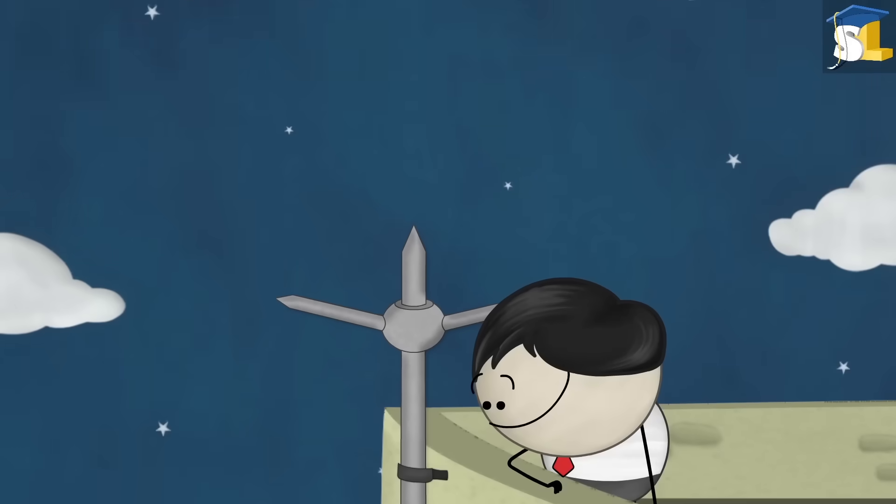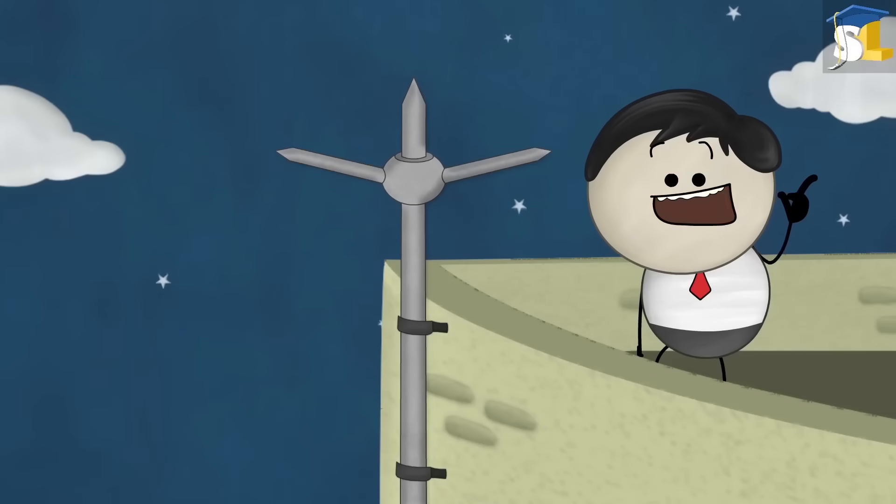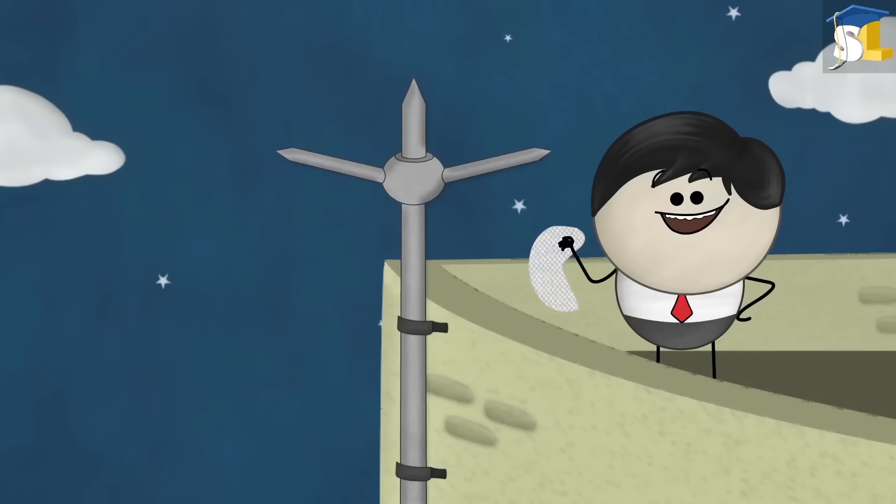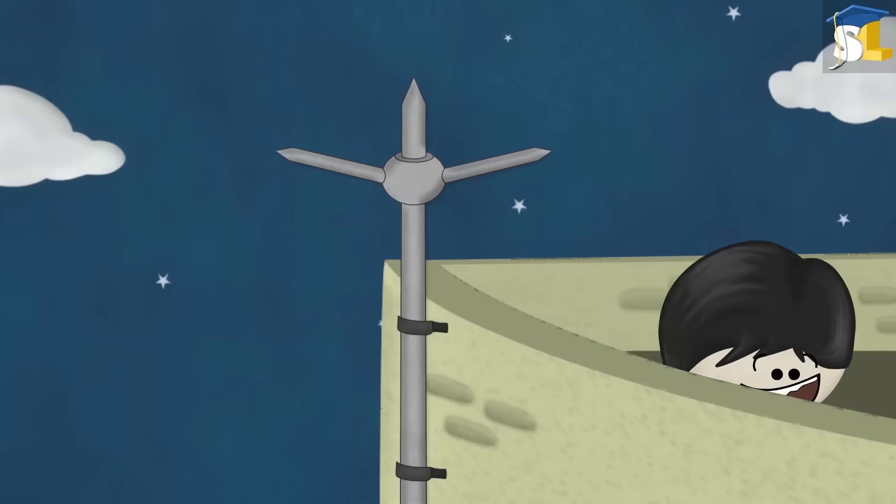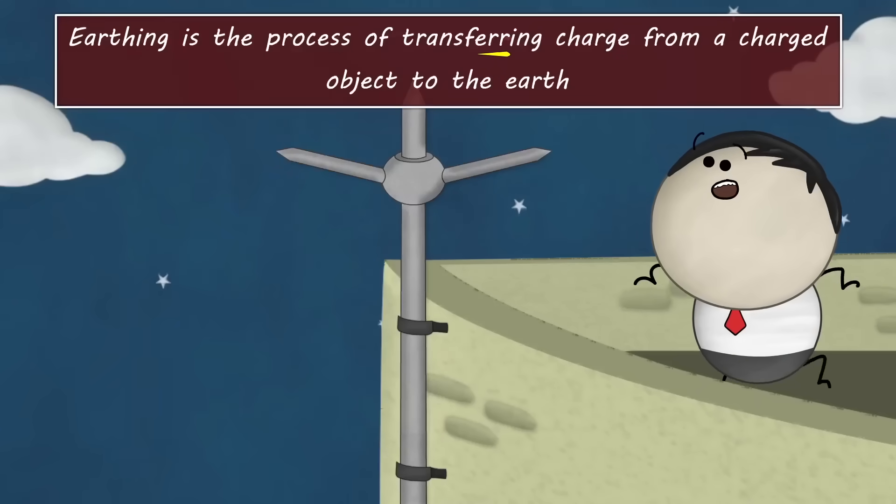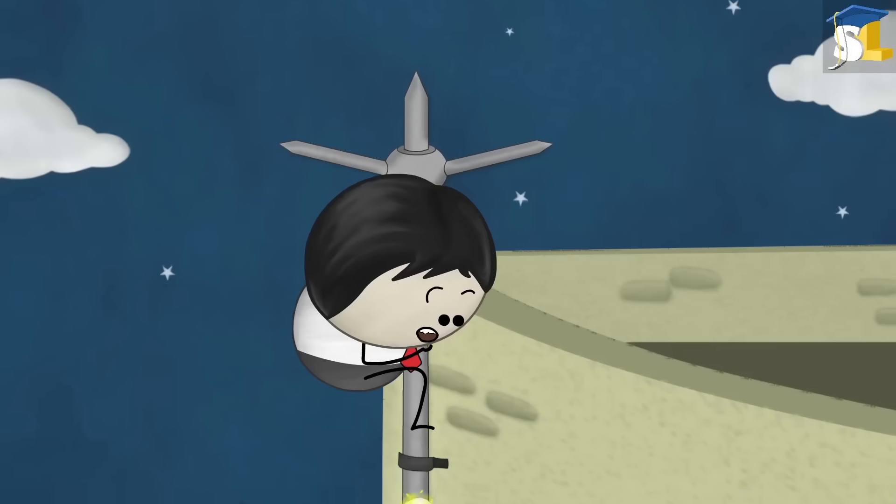Earthing. Why do buildings have lightning rods? I know. They are used to dry clothes. No. They are used for earthing. Earthing means digging the earth, right? No. Earthing is the process of transferring charge from a charged object to the earth. It is done with the help of this lightning rod.